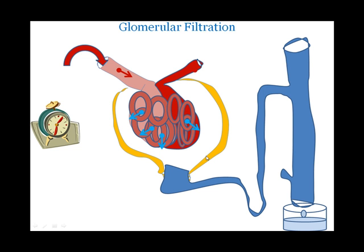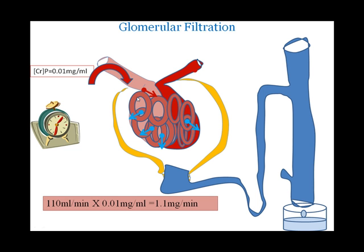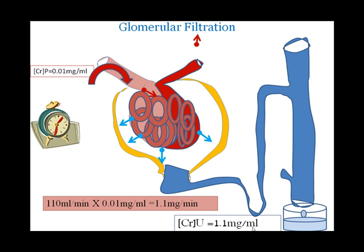Here I am going to explain the same exercise in detail. You can see the blood comes through the afferent arteriole to the glomerular tuft. It brings a plasma creatinine of 1 mg per deciliter, so I can calculate 0.01 mg per ml of creatinine is present in the blood. That blood filters through the glomerulus and the filtrate enters the glomerular space. The urine creatinine is about 1.1 mg per ml, or 110 mg per deciliter.